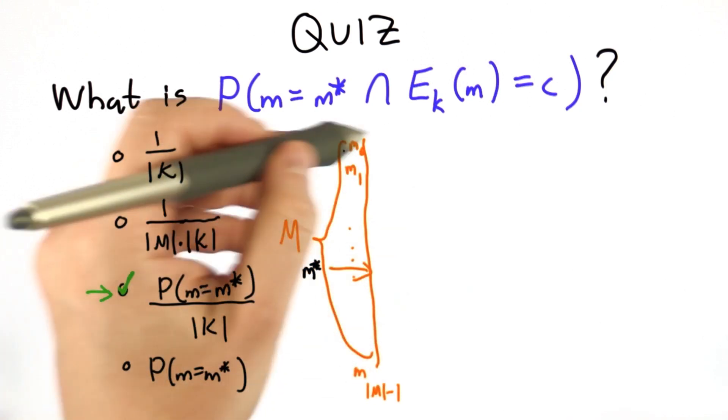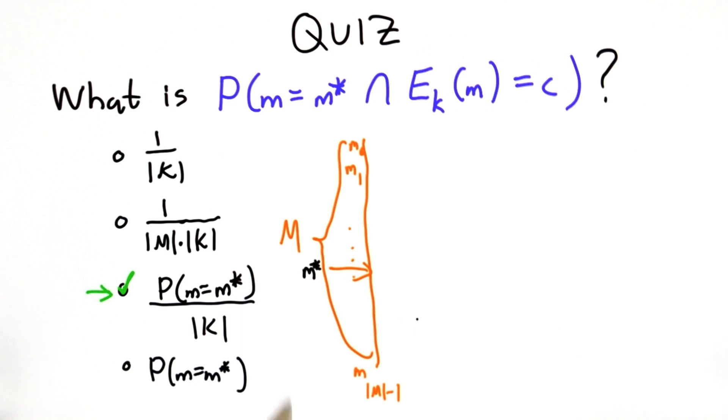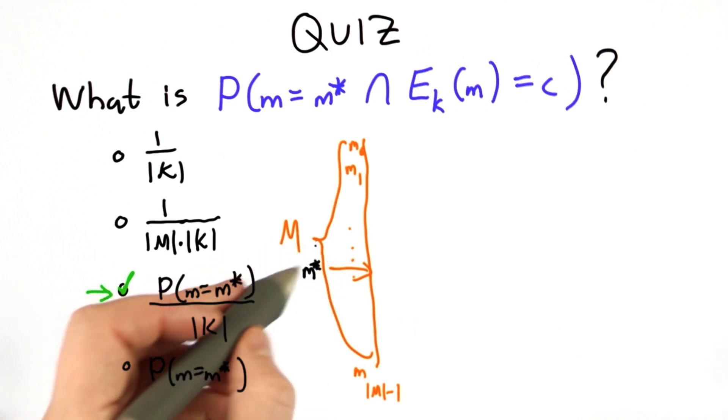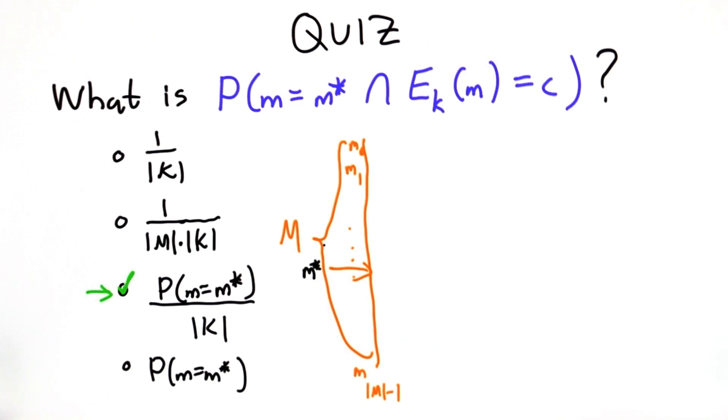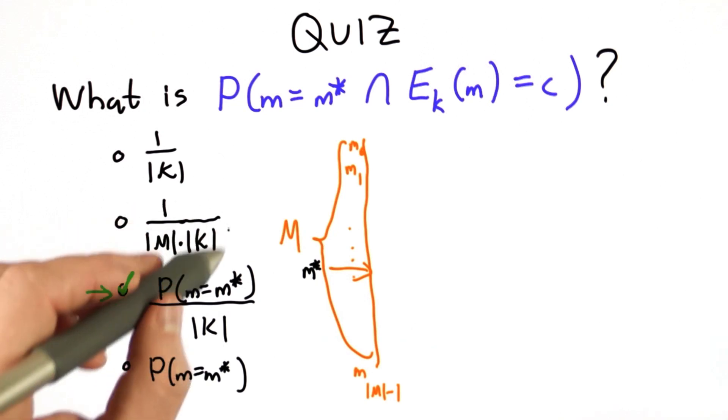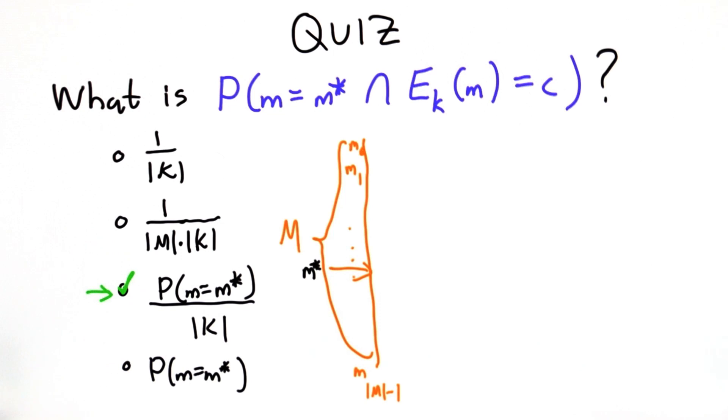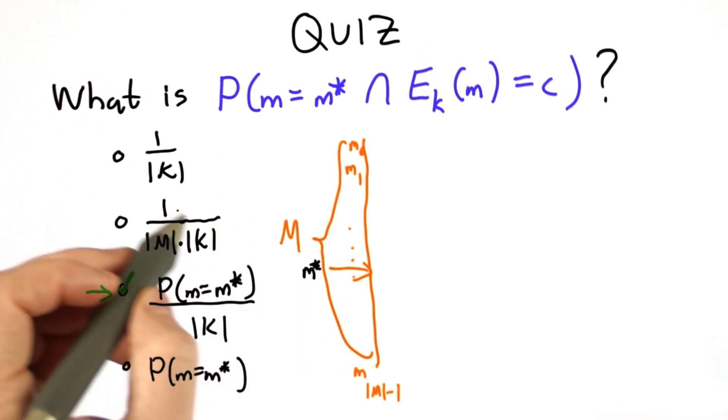We don't want to assume that the messages are uniformly distributed. So the probability that the message is M star is not necessarily 1 divided by the number of messages. If the messages were uniformly distributed, then this answer would also be correct. But they're not. We don't want to assume that.